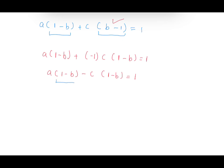1 minus b is equal to 1 minus b, so we can take out a common factor of 1 minus b.